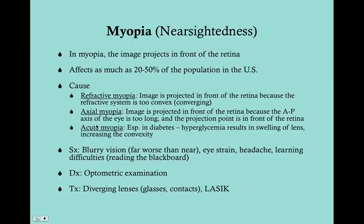There's also acute myopia. In diabetes, a sugar gets inside the lens, causing it to swell and increasing its convexity, which results in essentially a refractive myopia. This would be an acute myopia in a patient with severe hyperglycemia.